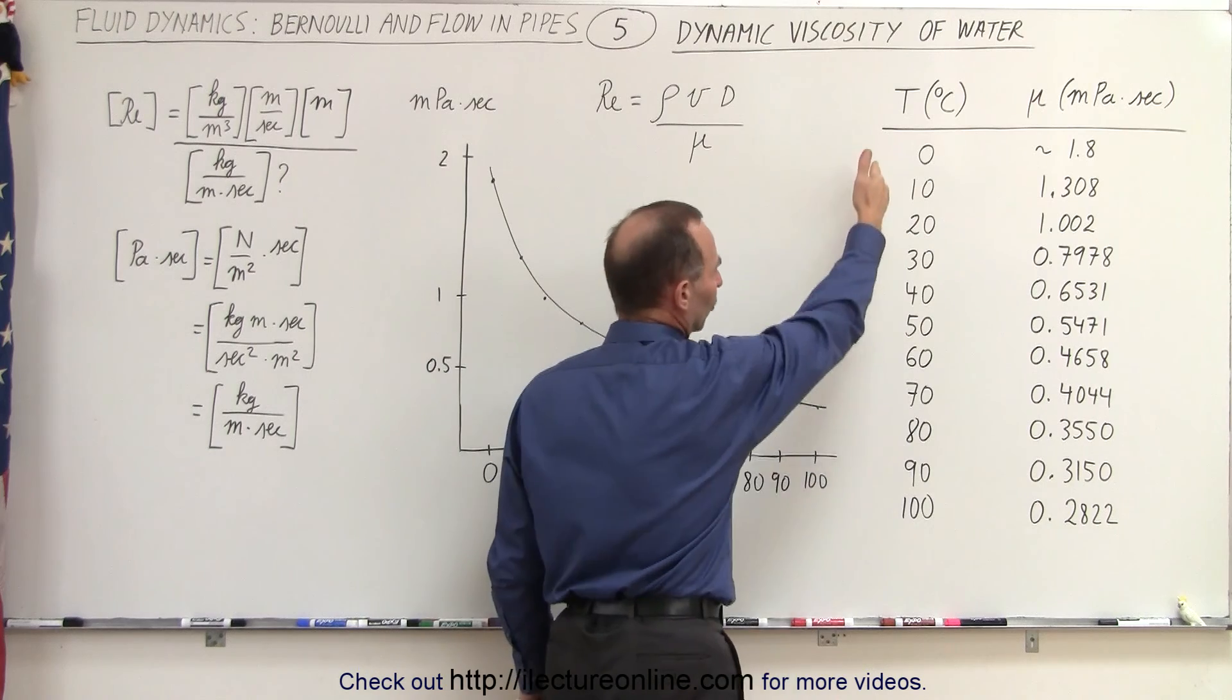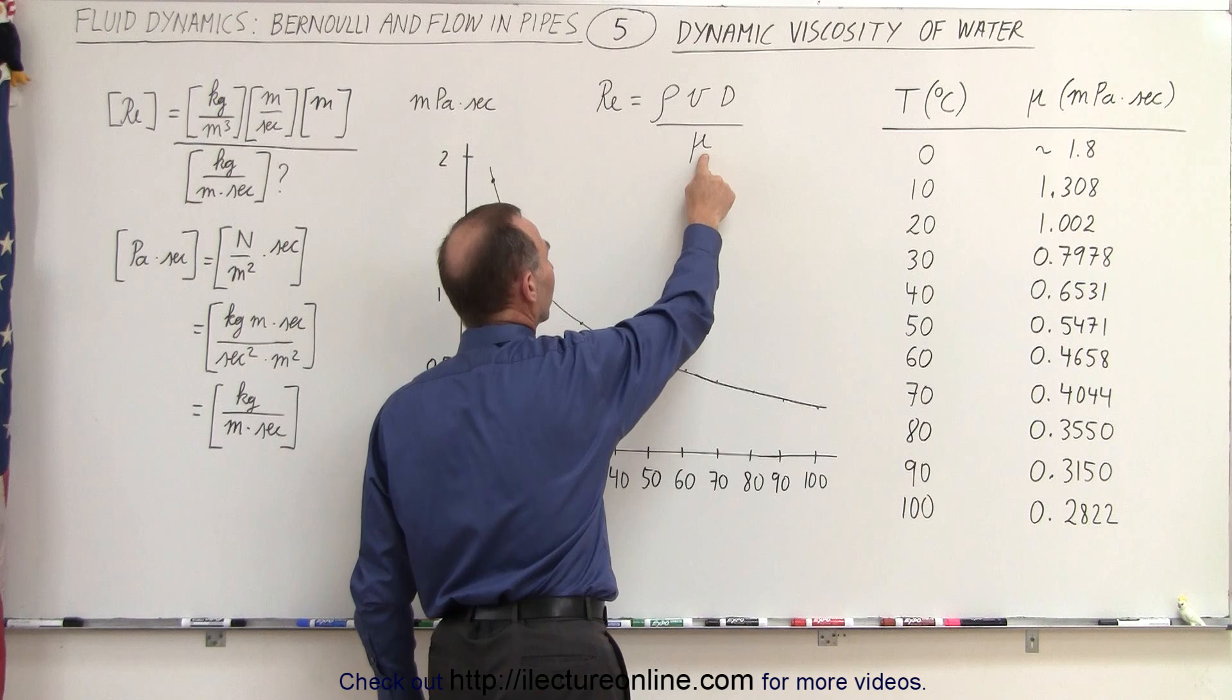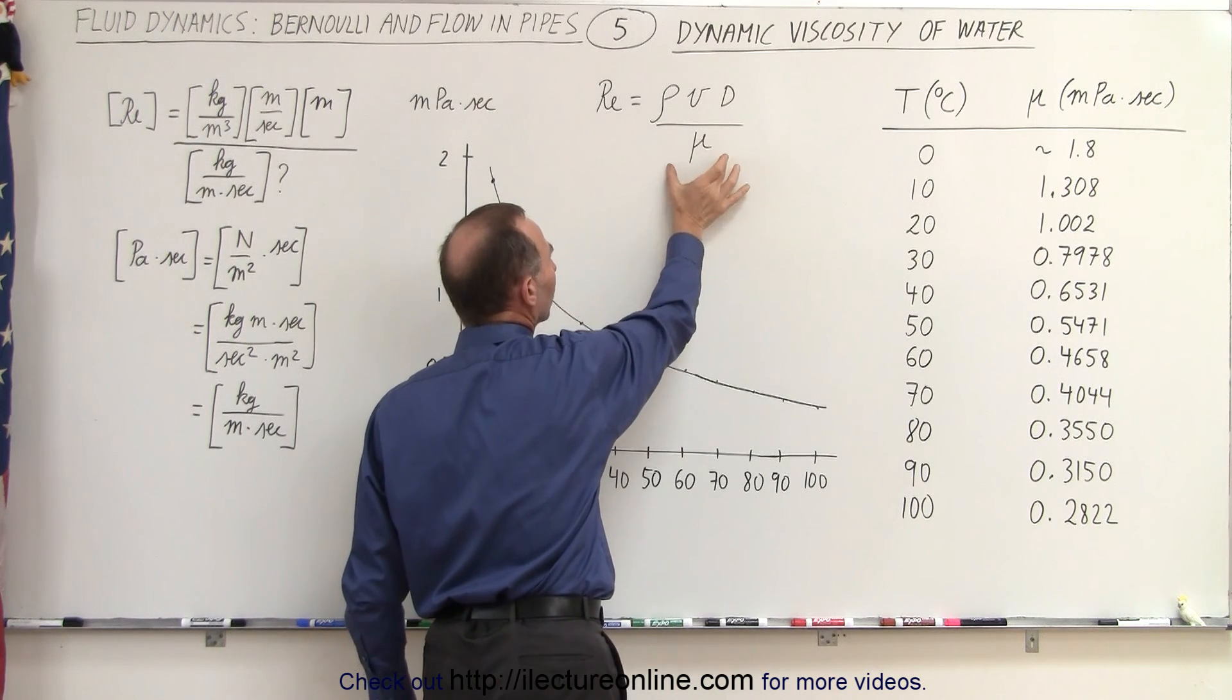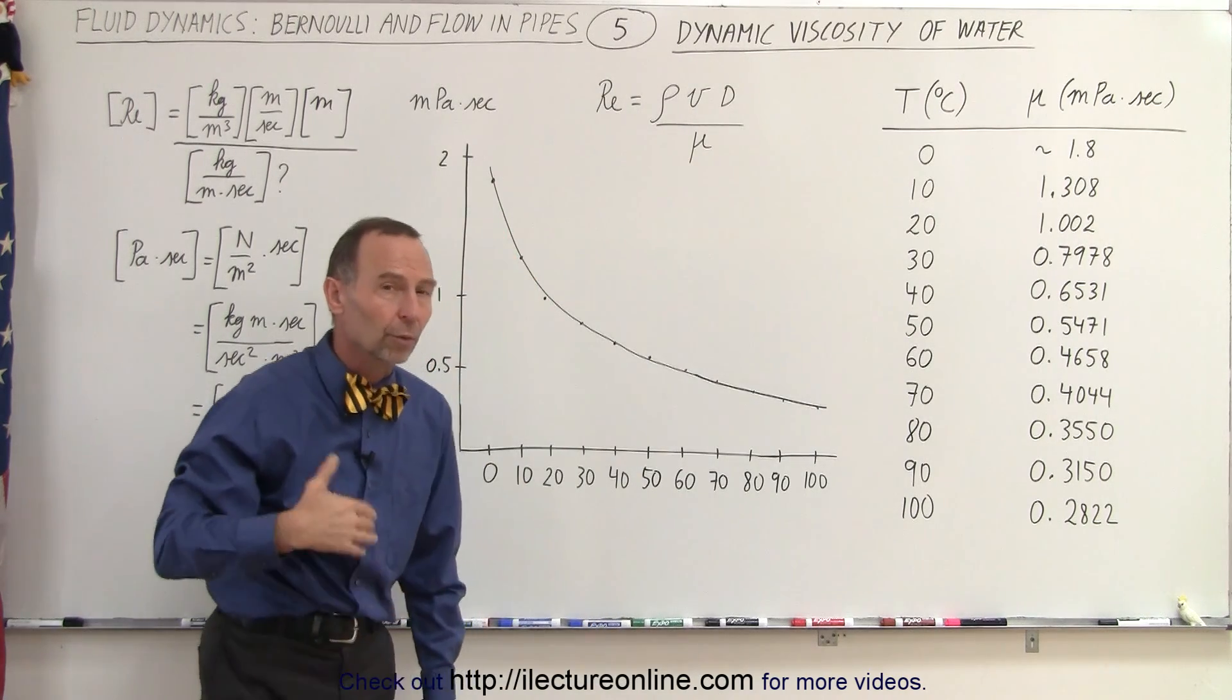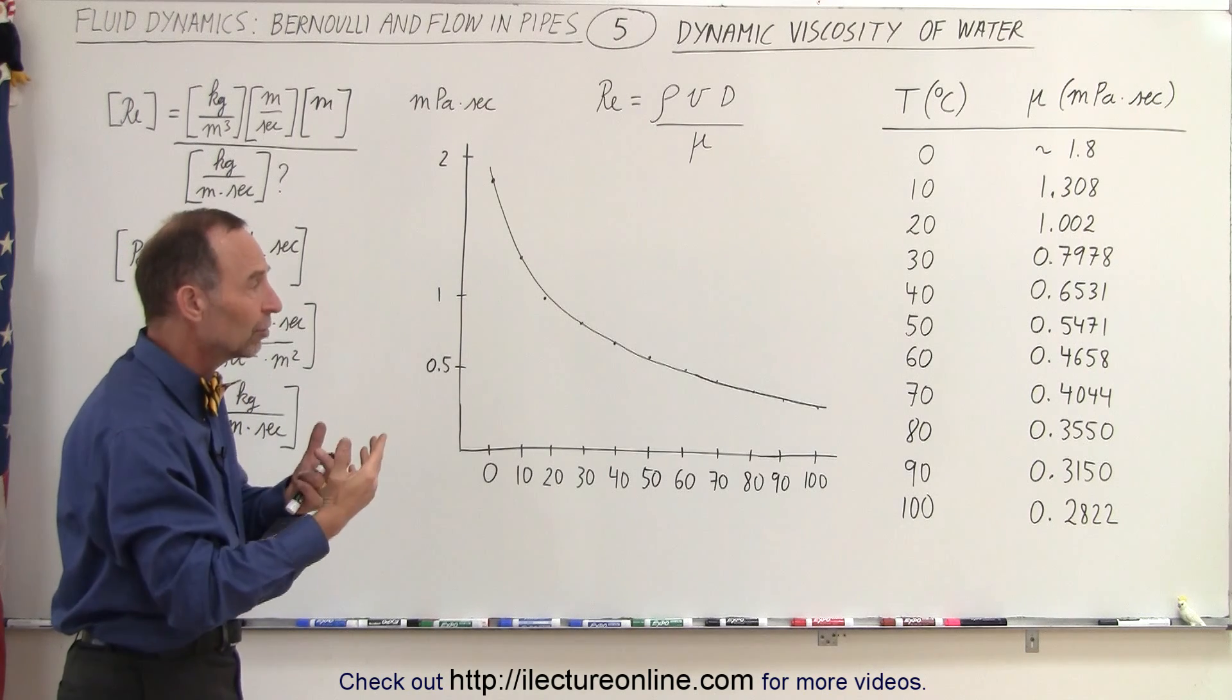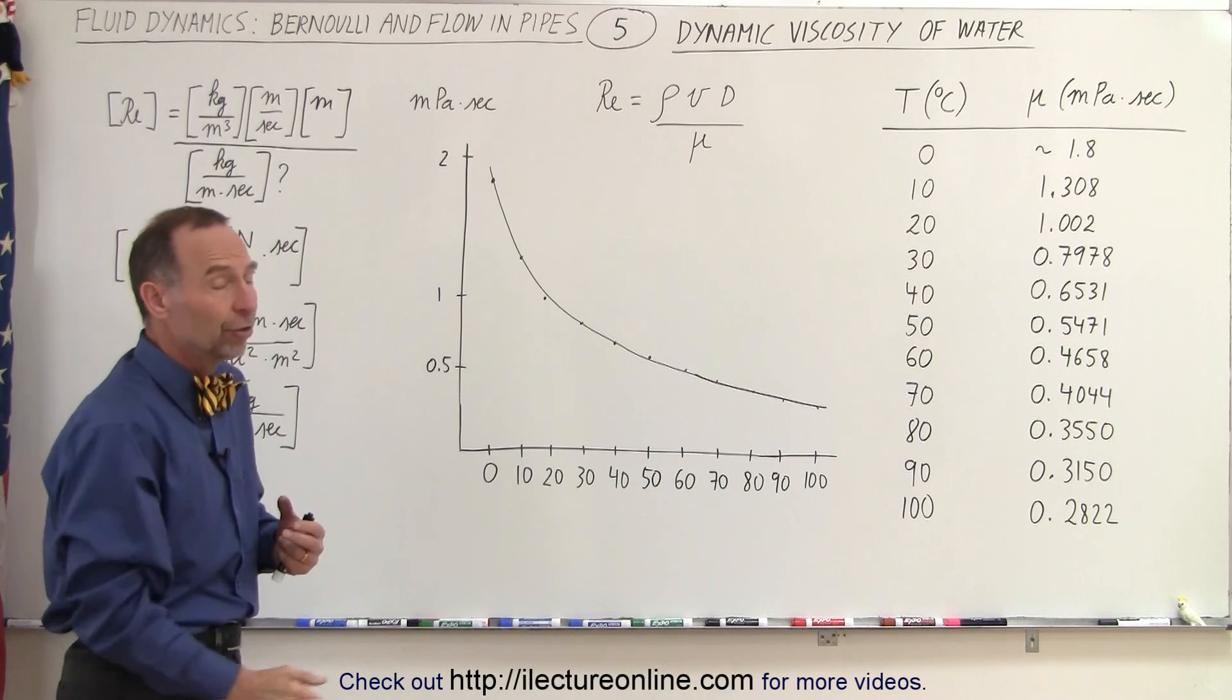Notice, as the temperature increases, the dynamic viscosity increases. But since it's in the denominator of this equation, a smaller dynamic viscosity causes a larger Reynolds number, which means that if the temperature increases, the temperature of the water increases, there's a higher likelihood for turbulent flow rather than laminar flow.